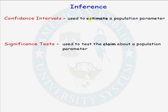The first method, confidence intervals, are used to estimate a population parameter. A test of significance is used to test a claim about a population parameter.